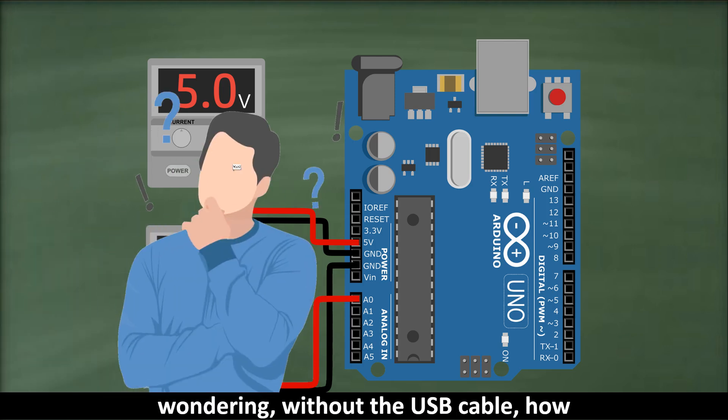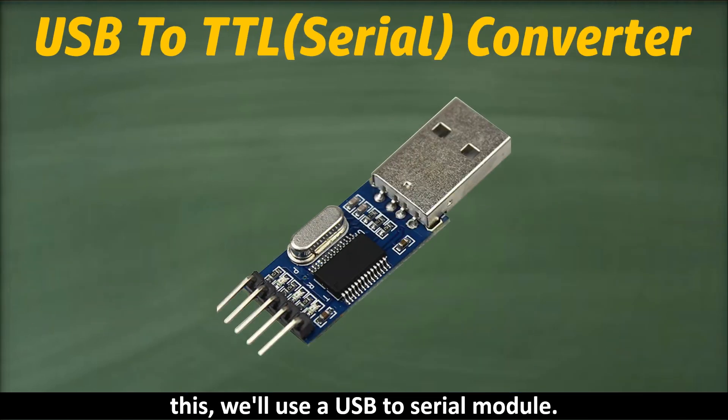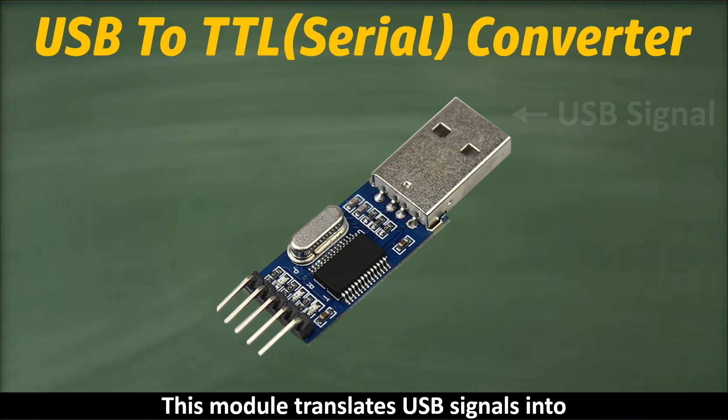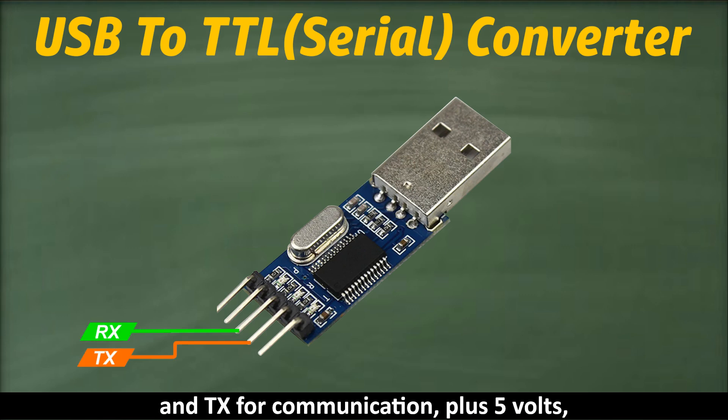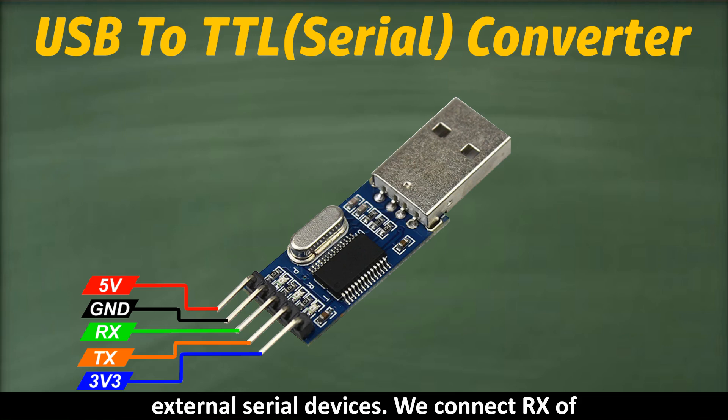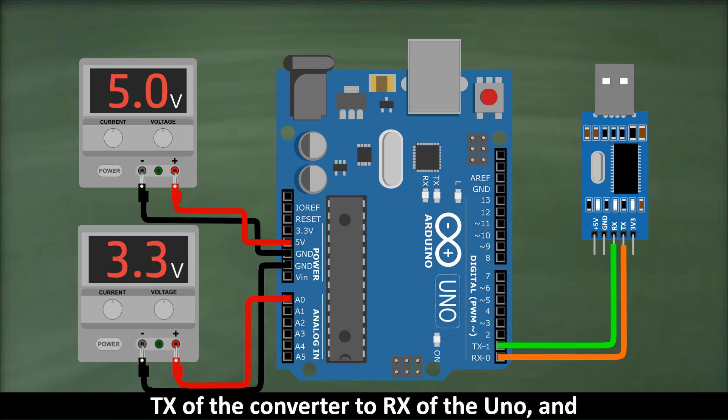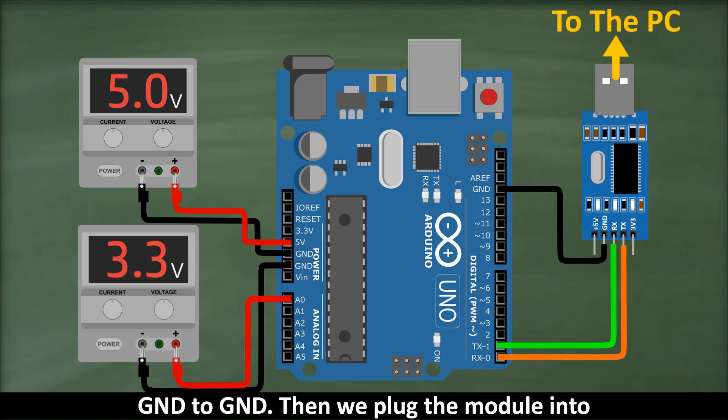Up to this point you might be wondering, without the USB cable, how will we communicate with the computer? For this we'll use a USB to serial module. This module translates USB signals into serial and back. It has 5 pins, RX and TX for communication, plus 5 volts, 3.3 volts, and GND for supplying power to external serial devices. We connect RX of the converter to TX of the Arduino UNO, TX of the converter to RX of the UNO, and GND to GND. Then we plug the module into the computer.